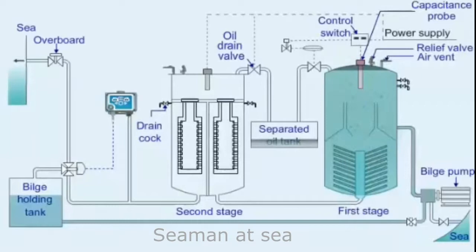The capacitance probe senses oil quantity in the collection space and energizes the solenoid through the control switch. Water then passes downwards from the first to the second stage coalescer through a central pipe.